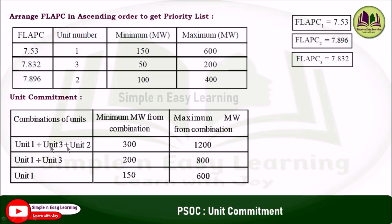The first combination includes all three units — unit 1, unit 3, and unit 2 — giving a minimum of 300 MW and a maximum of 1200 MW. The second combination leaves out the least-priority unit 2, keeping unit 1 and unit 3, with a minimum limit of 200 MW and a maximum limit of 800 MW (600 + 200).